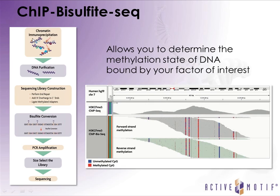For ChIP-bisulfite-seq, you perform your standard chromatin immunoprecipitation, purify the DNA, and perform library prep prior to amplification — but this library prep uses methylated adapters. You then perform bisulfite conversion to convert any non-methylated Cs to Ts, then PCR amplify and sequence. The output shows K27 trimethylation ChIP-seq reads, with blue vertical lines representing the methylation state of CpG dinucleotides found within these peaks — red being methylated CpGs and blue being unmethylated CpGs.